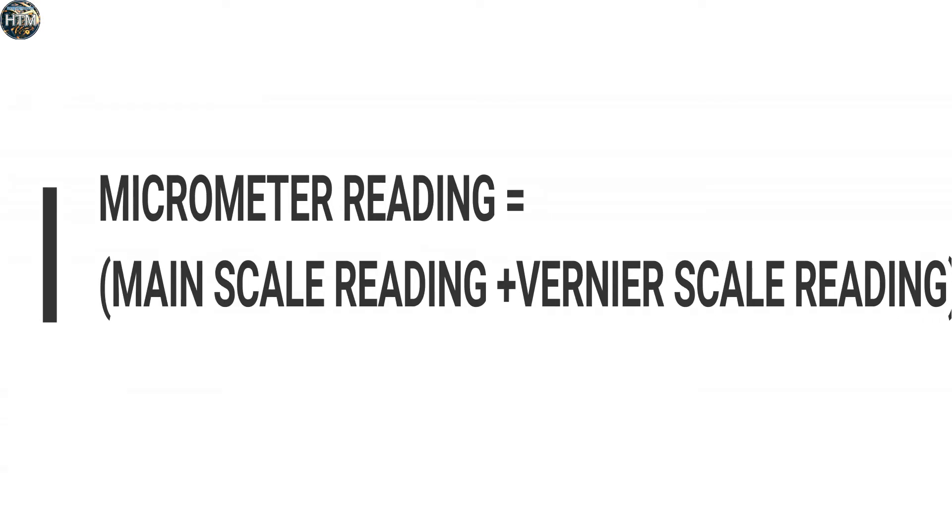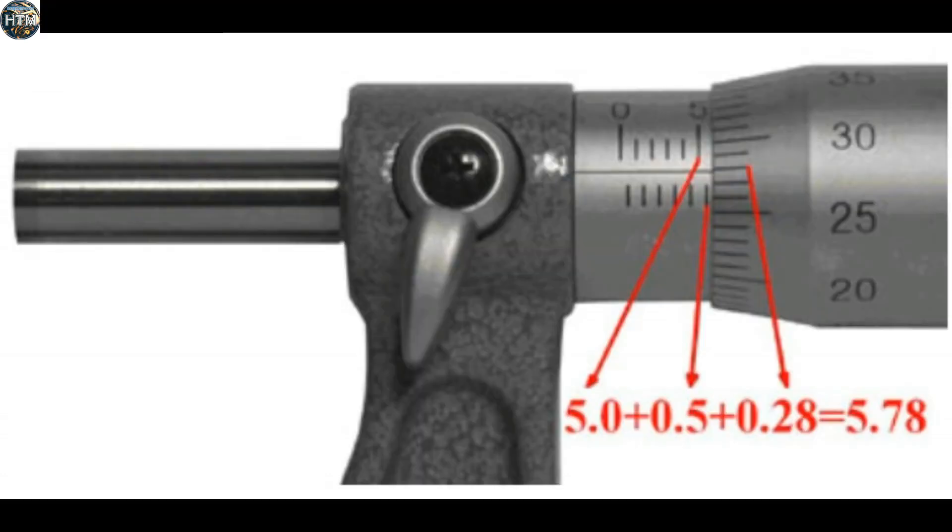For example, left of the thimble edge shows 5mm and 0.5mm, equal to 5.5mm. Vernier scale reading equals 0.28mm. So the total reading equals 5mm plus 0.5mm plus 0.28mm, equal to 5.78mm.